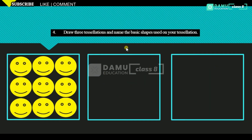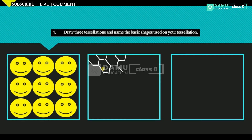So, in this module we are going to discuss the fourth question: draw three tessellations and name the basic shapes used in your tessellations. Here I used basic shapes — a smiley face, repeating continuously without giving any gap. Any pattern or single figure repeating continuously without any gap — that figure or shape is called a tessellation. You can draw it like this: a hexagonal shape — drawing hexagons without giving any gap.